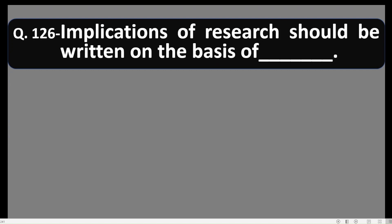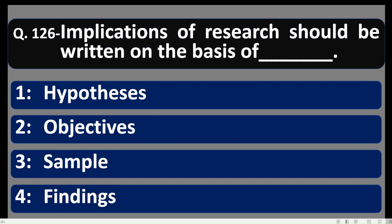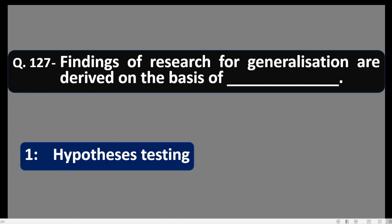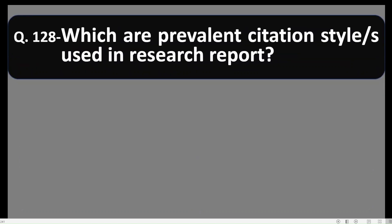Question number 126: Implications of research should be written on the basis of findings only. For each finding, we have to write the implication. Question 127: Findings of research for generalization are derived on the basis of hypothesis testing. Option number 1 is correct.